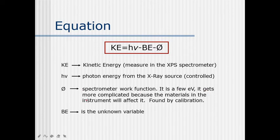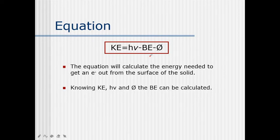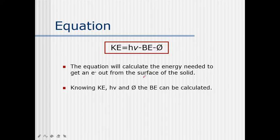φ is the spectrophotometer work function, which is a few electron volts. It gets more complicated because materials in the instrument affect it, and it is found by calibration — different materials have different work functions. Binding energy is the unknown variable; it is what we want to know. Knowing KE, hν, and φ, the binding energy can be calculated. This equation gives the energy needed to get an electron out of the surface of the solid.